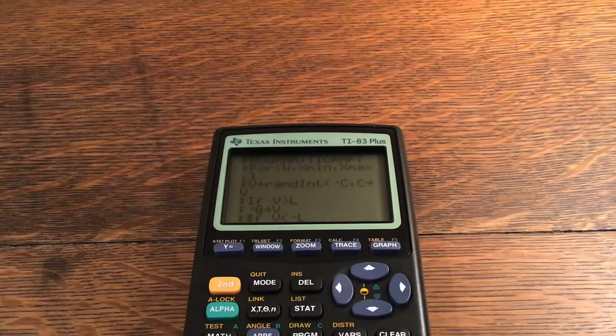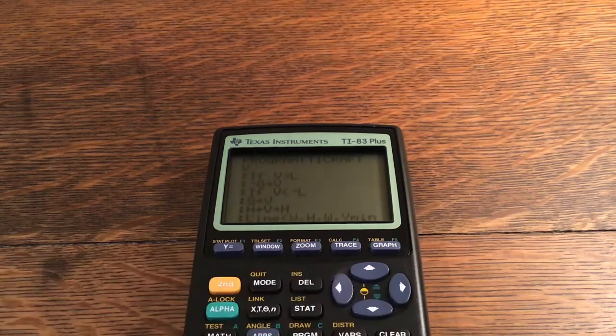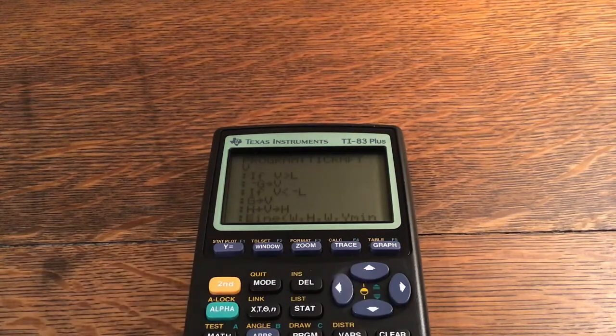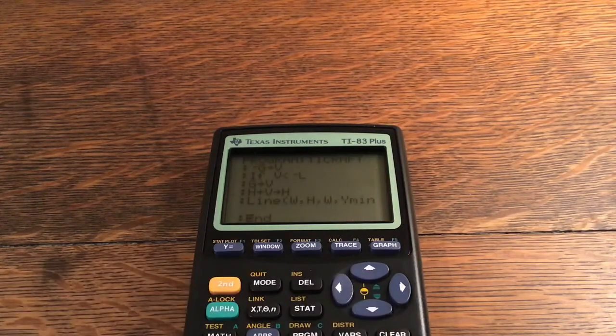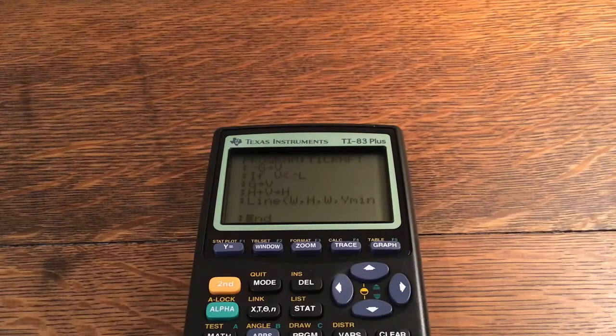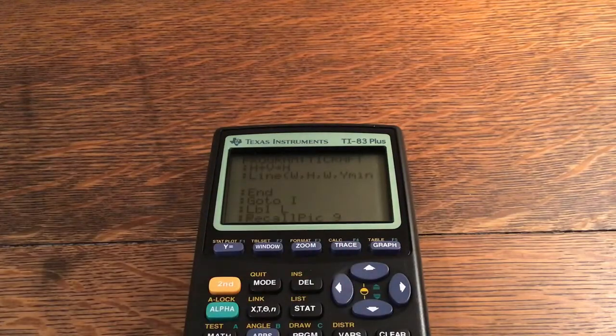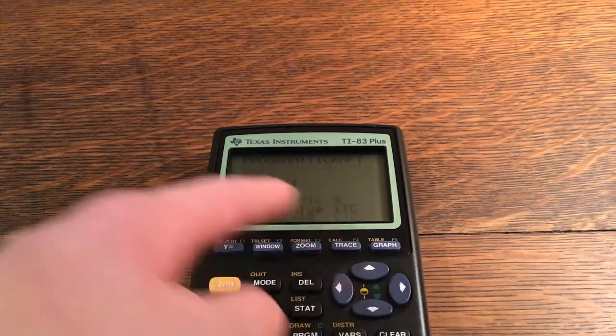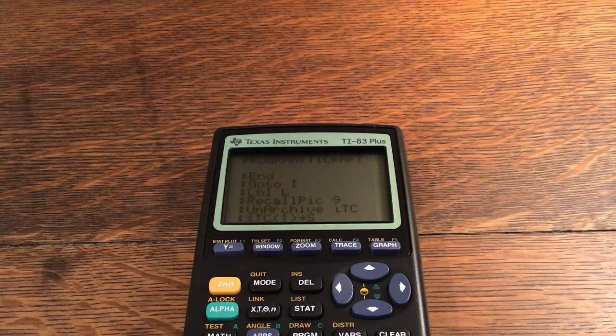For W comma Xmin comma Xmax comma 1. V plus random -C comma C store into V. If V is greater than L-G store into V. If V is less than -LG store into V. H plus V store into H. Line at W comma H comma W comma Ymin. It'll go from the height to the bottom and go to I.